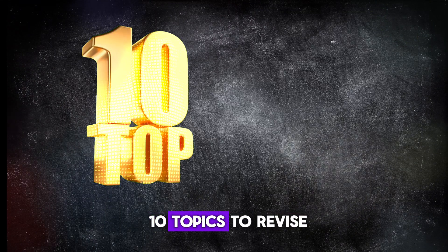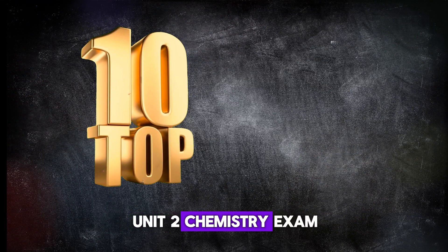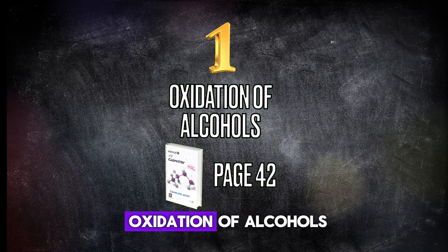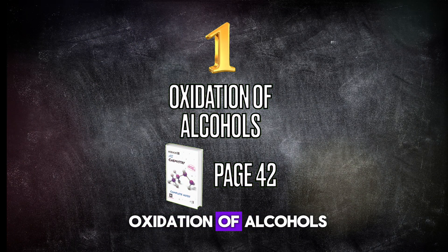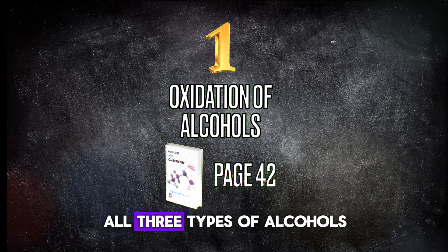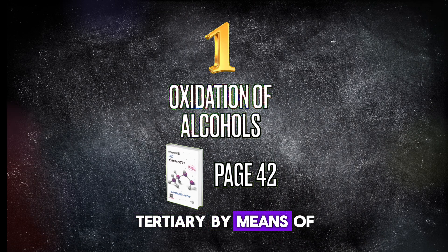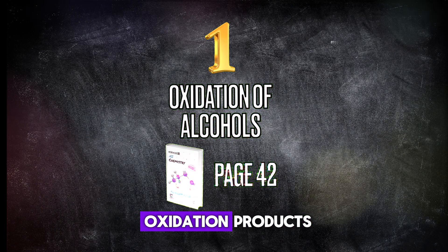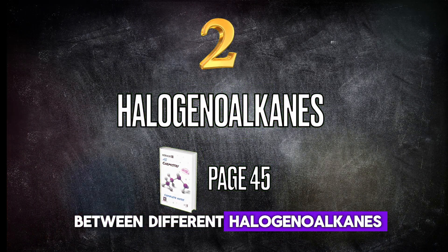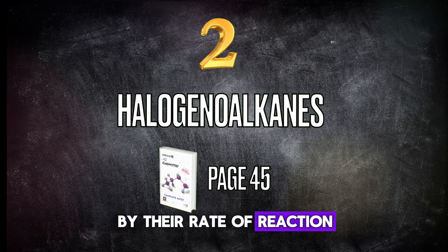Here are the top 10 topics to revise for your IEL Unit 2 Chemistry exam in 2025. Number one: study the oxidation of alcohols — be able to differentiate between all three types of alcohols (primary, secondary, tertiary) by means of their oxidation products. Number two: be able to differentiate between different halogenoalkanes by their rate of reaction.